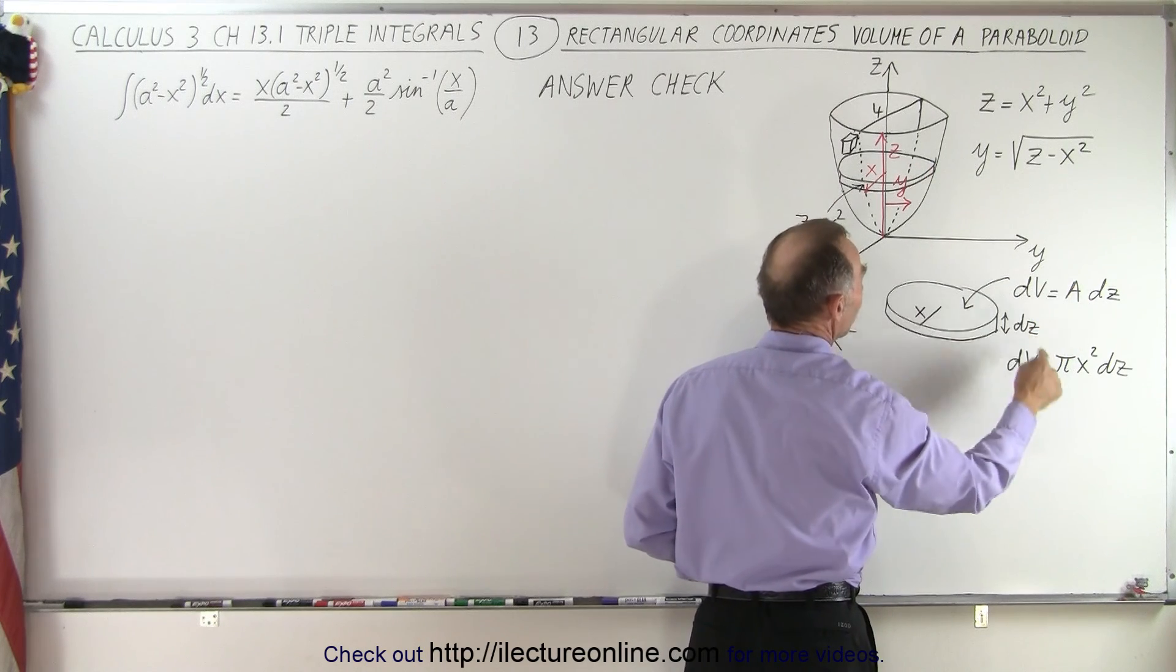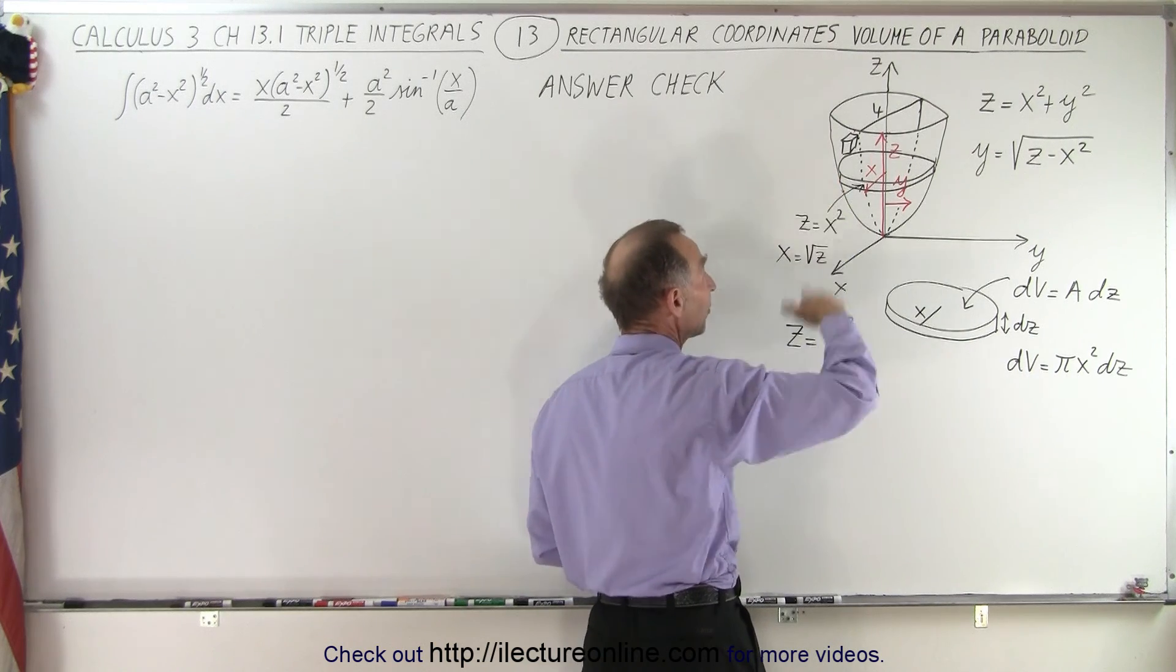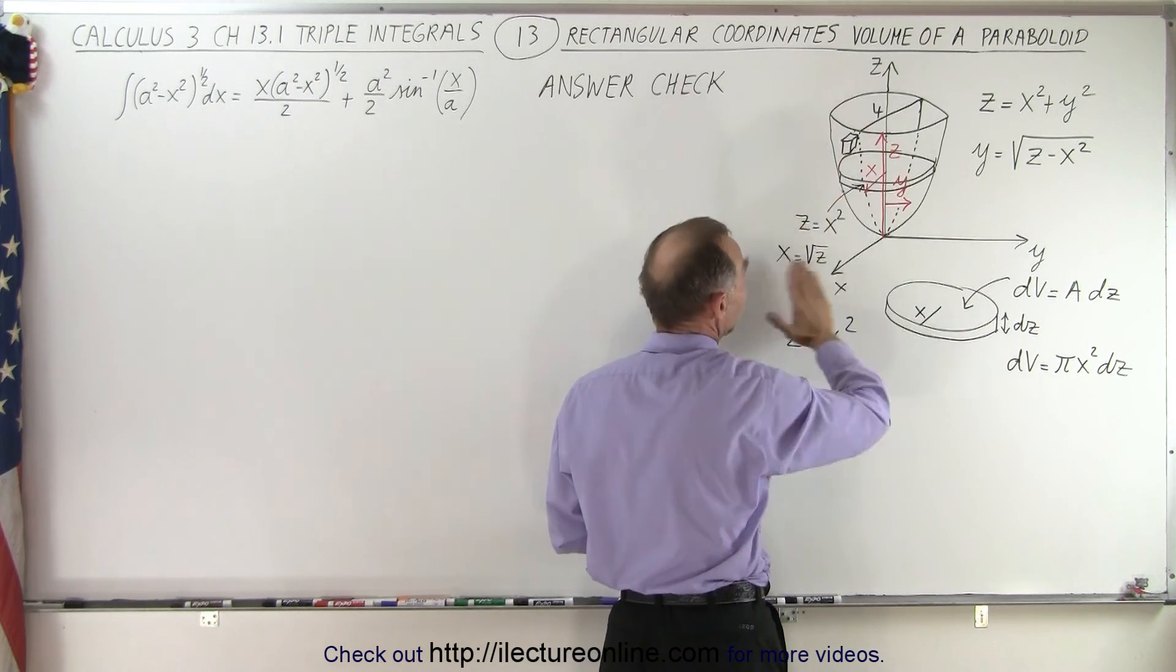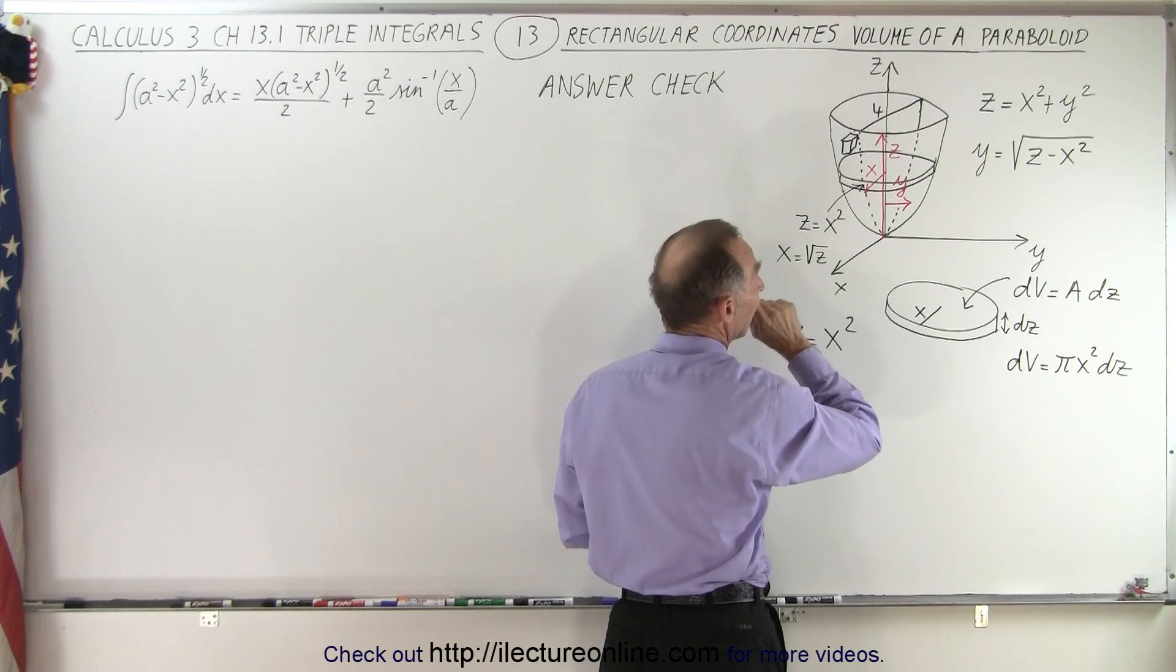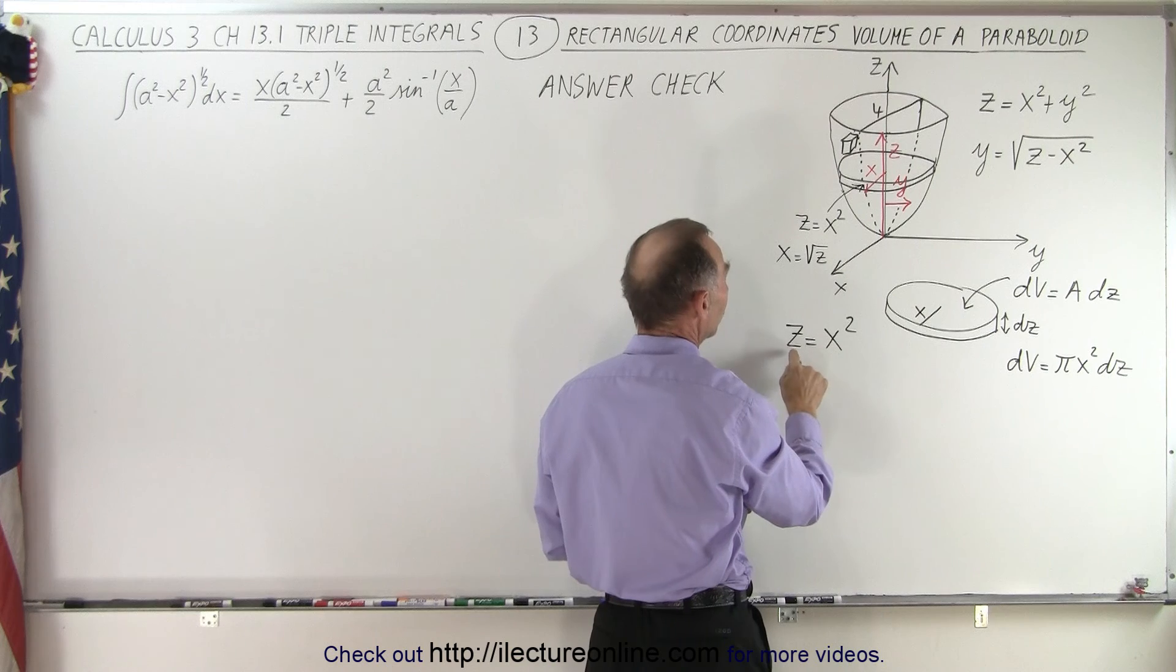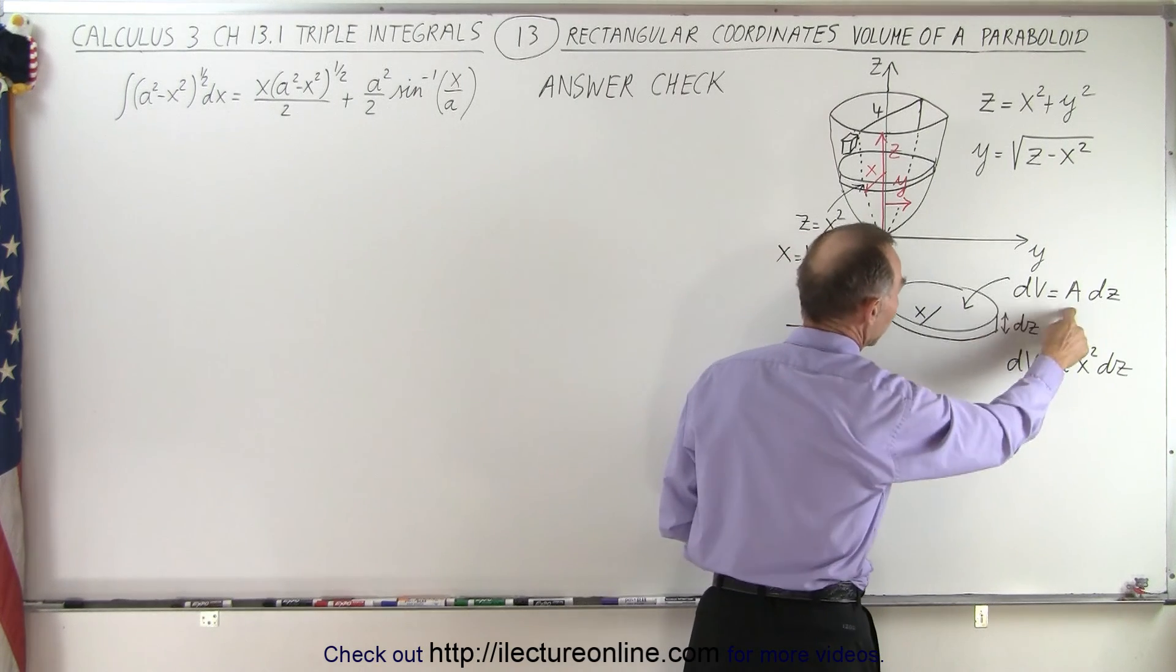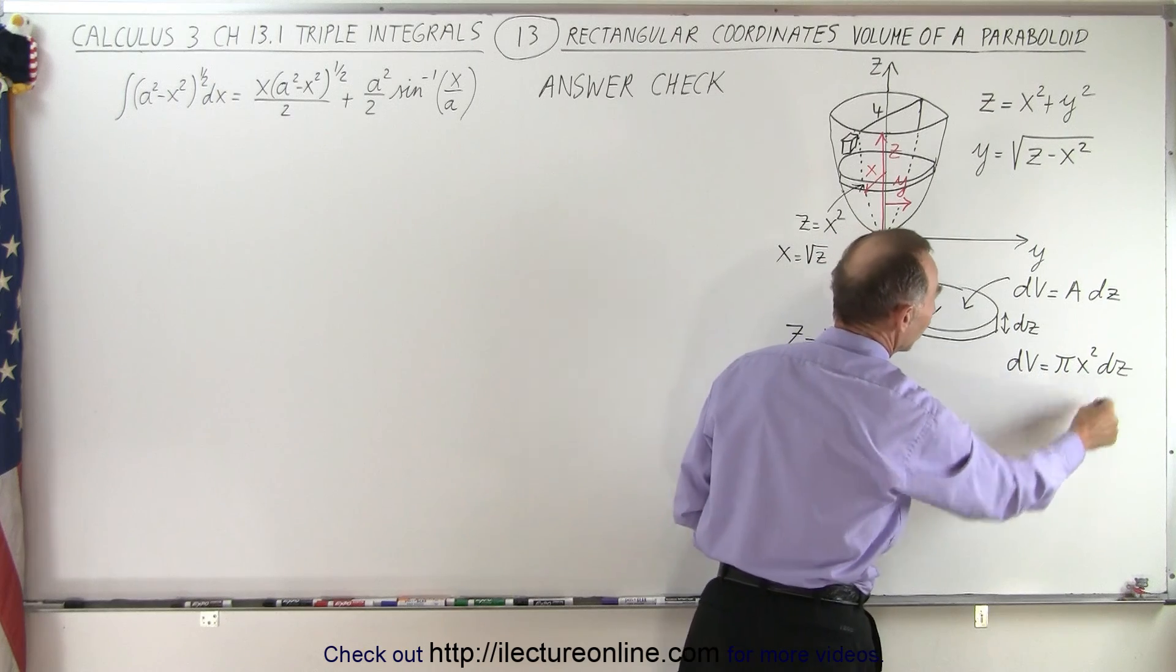The area would be πx² because we have a relationship between x and z. If we only look in the xz plane and then revolve it around the z-axis, notice we have a relationship where z = x². So the area is going to be πx²dz.